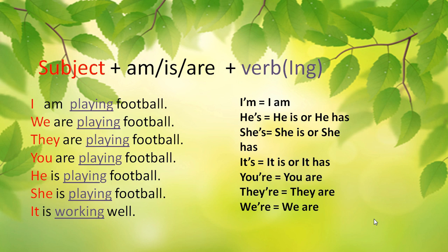...the verb with -ing added to it. The subjects are: I, we, you, they, he, she, and it. So if you want to make a sentence, you would say: I am, we are, they are, you are, he is, she is, it is. To complete the sentence, you need to put a verb. For example: I am playing football. Remember, the base verb is 'play,' but now it's 'playing' because it's in the present continuous.